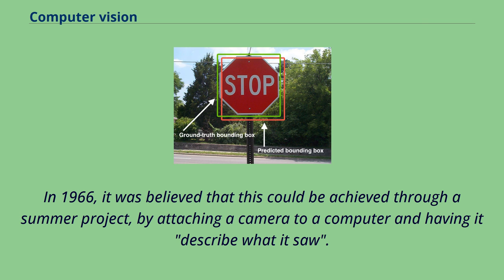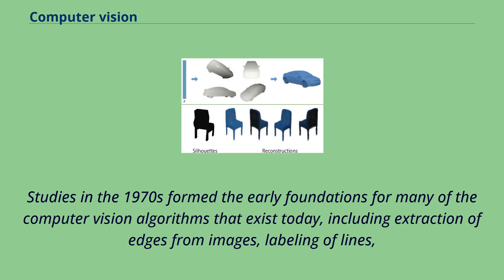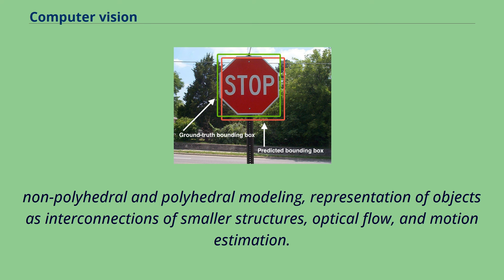What distinguished computer vision from the prevalent field of digital image processing at that time was a desire to extract three-dimensional structure from images with the goal of achieving full scene understanding. Studies in the 1970s formed the early foundations for many of the computer vision algorithms that exist today, including extraction of edges from images, labeling of lines, non-polyhedral and polyhedral modeling, representation of objects as interconnections of smaller structures, optical flow, and motion estimation.